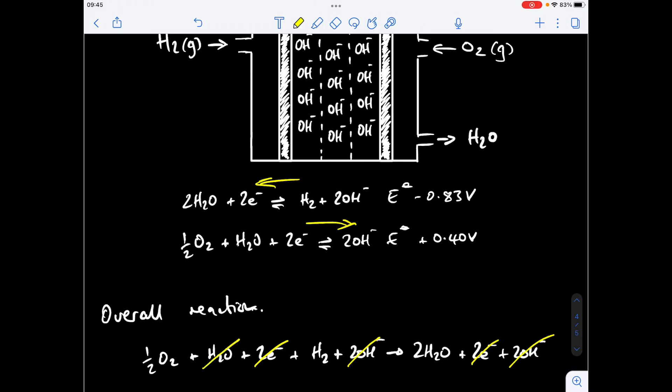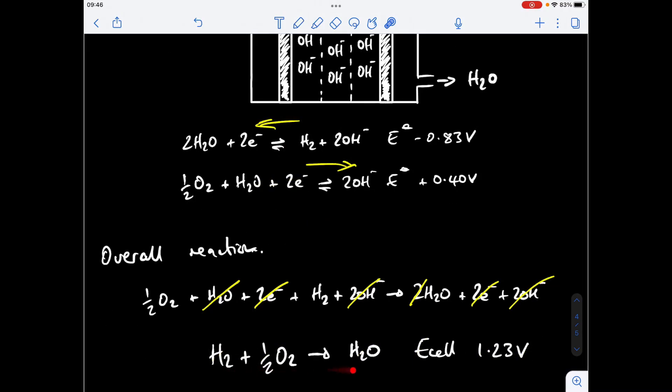If I take that one out and knock that down to one it leaves us with exactly the same overall reaction as we had for the acid version of the hydrogen fuel cell. The other thing that's the same is the voltage is exactly the same. Most positive minus least gives 1.23 volts.